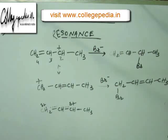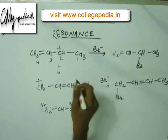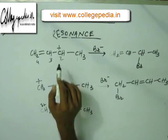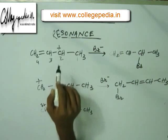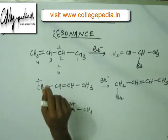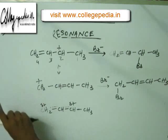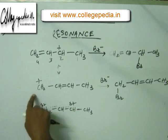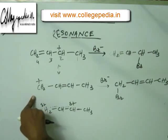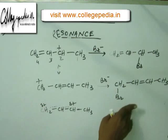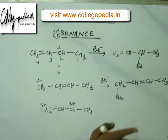For now, the key point is: if the charge has been shown at C2, that does not mean the charge remains only at C2. You will do resonance of that charge, identify all the possible positions to which the charge can go, and correspondingly identify all the possible products that can be formed. This is how resonance applies here.